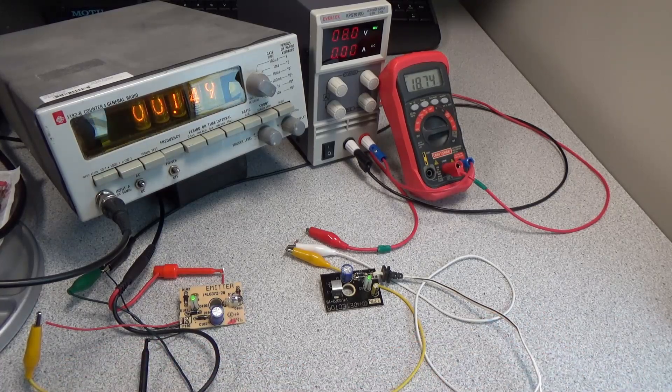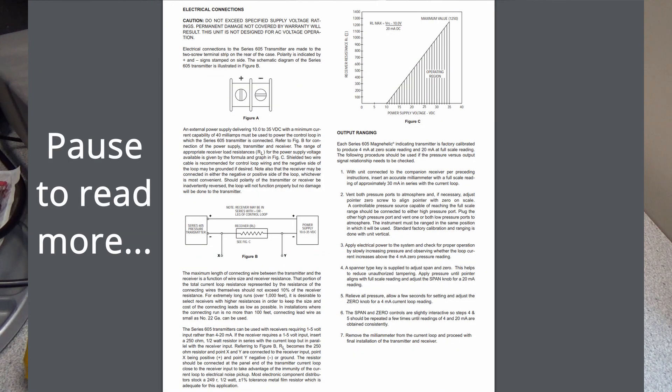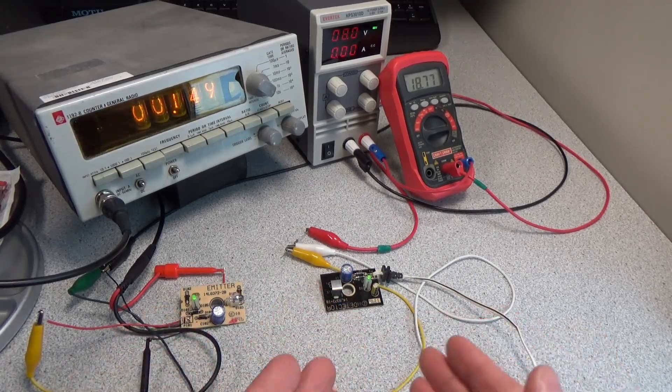This is operating in what's known as a current loop. These two devices are in parallel with each other, and they will change the current based on how much it senses.